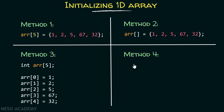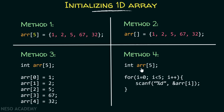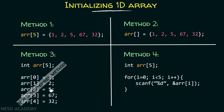Now let me discuss method number four. Here you are first declaring the array, and then inside a for loop you are accepting inputs from the user with the help of the scanf function. Those inputs get entered into the array one by one. This for loop runs from zero to four because the size specified is five. However, this is not a preferred method because it is quite cumbersome to mention all these indexes and enter elements one by one. Instead, you can write it in the method two way.